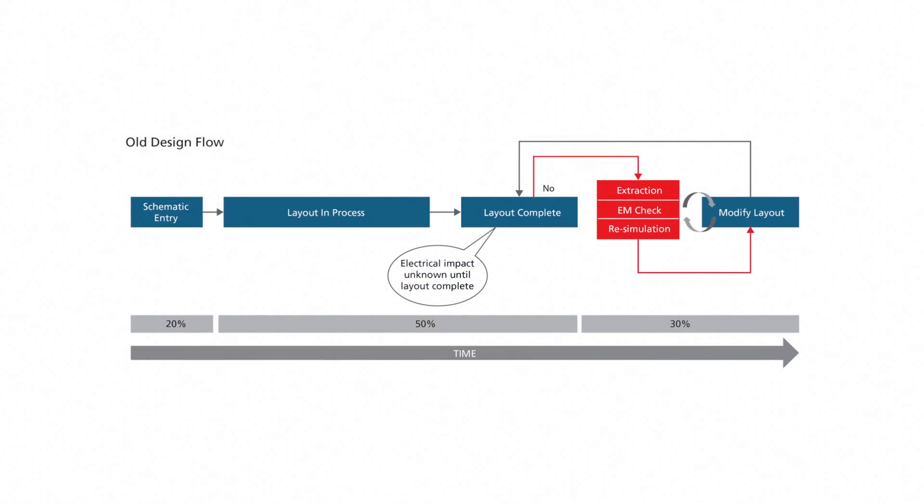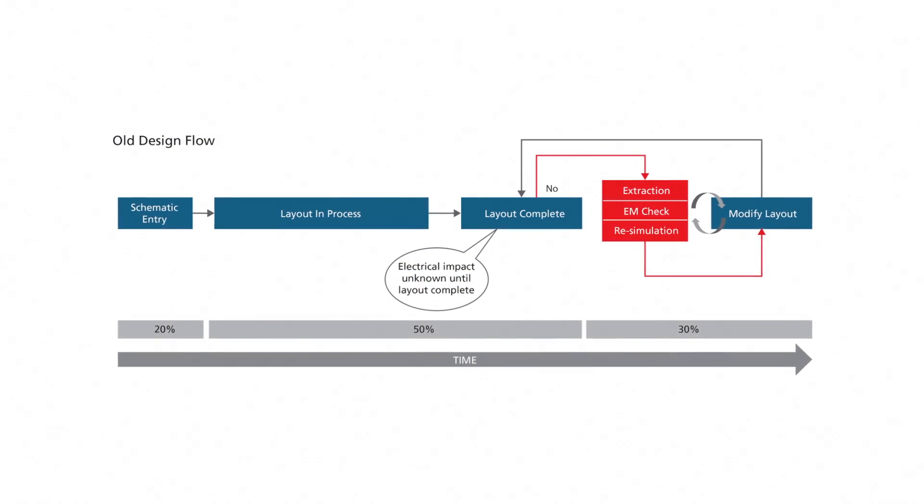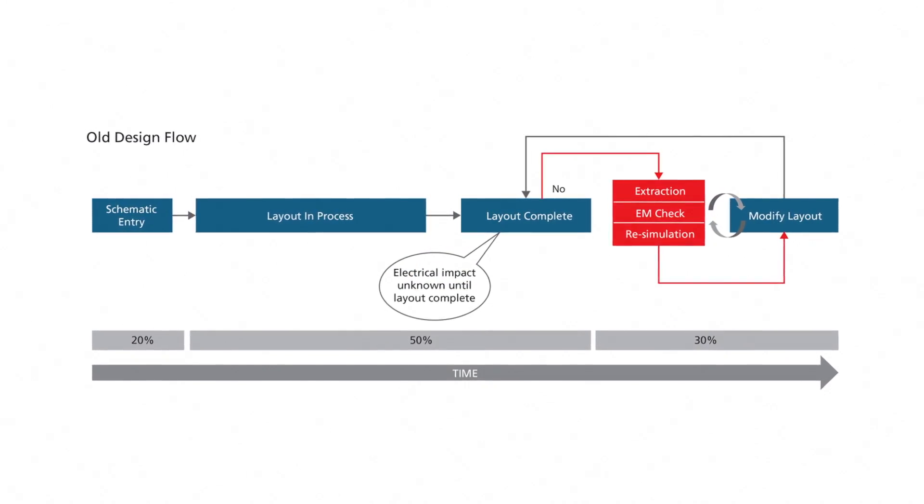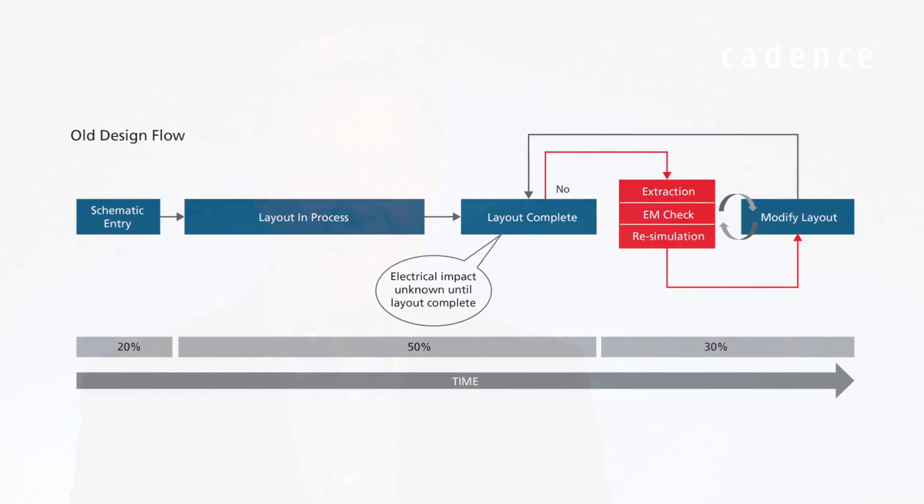This uncertainty arises when circuit designers have to wait until they have a completed and LVS DRC clean layout before they can verify that that layout meets their original design intent. While they're waiting, a large series of layout decisions are made regarding placement and routing with little or no awareness of their electrical impact.